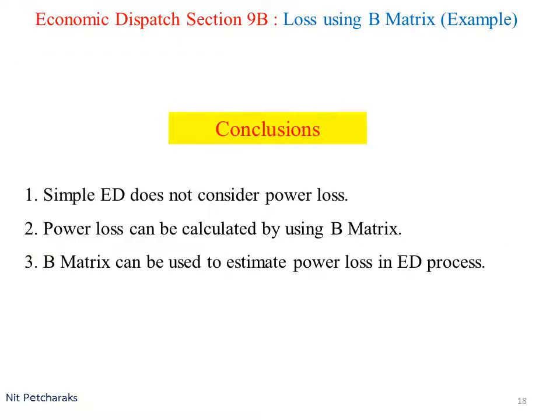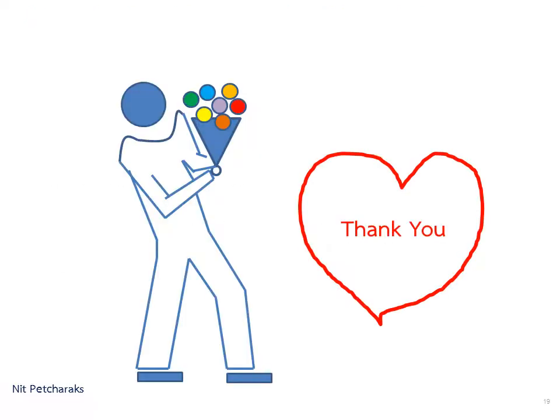In conclusion, simple economic dispatch does not consider power loss. However, we can estimate it by using B-metrics. It will be useful for economic dispatch considering power loss. It will dispatch power with the objective function of minimum total production cost and minimum total power loss. Thank you for your attention. Please stay tuned for more clips.